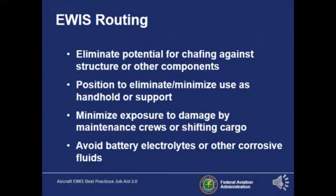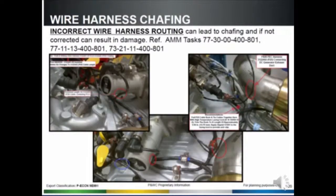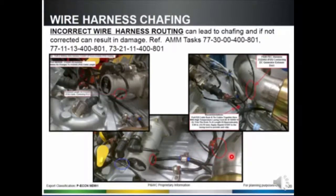Another thing to consider is EWIS routing. Wires should be routed throughout the aircraft to eliminate potential for chafing against structures or components. They should not be used as a handhold or support, should not be exposed to damage from maintenance crews or shifting cargo, and should not be exposed to battery electrolytes or other corrosive fluids. A Pratt & Whitney Best Practices example shows wires routed with chafing all across the engine — even experienced installers can route wires poorly, so be mindful when doing engine changes.